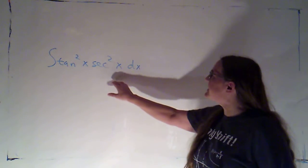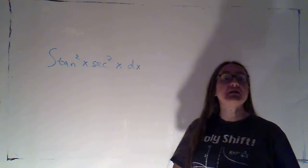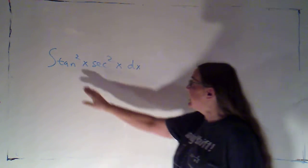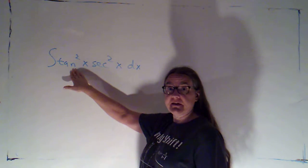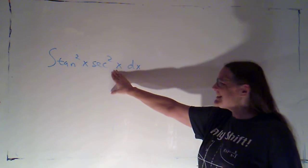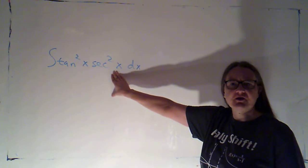This example is kind of interesting because I actually see a product of two different function compositions. Here I've got tangent plugged into the squaring function and secant plugged into the squaring function.